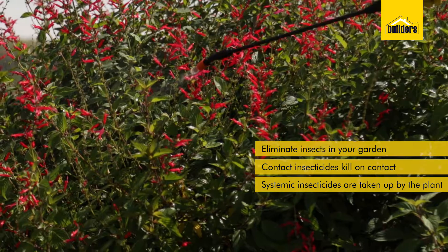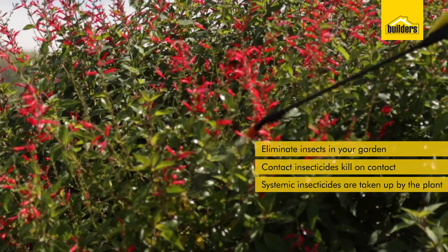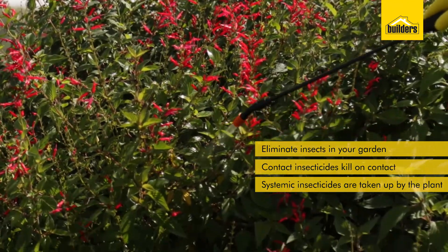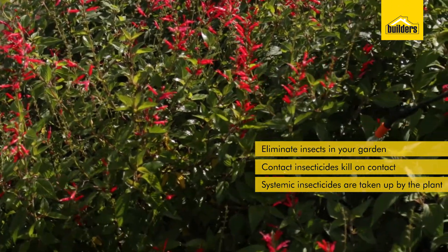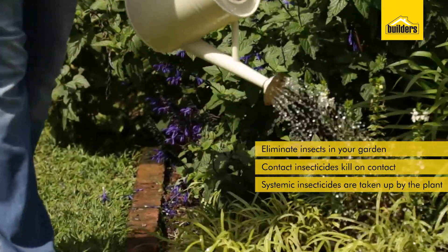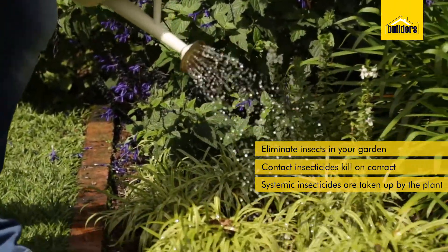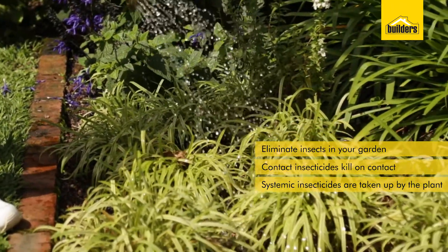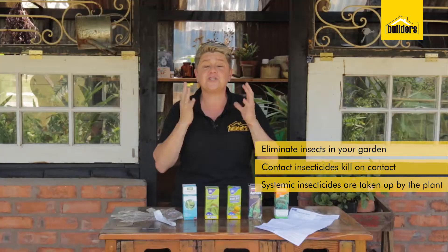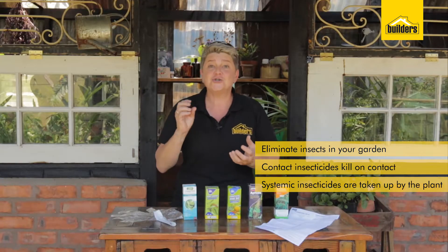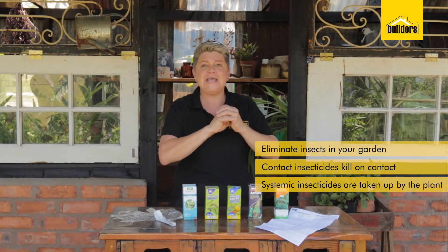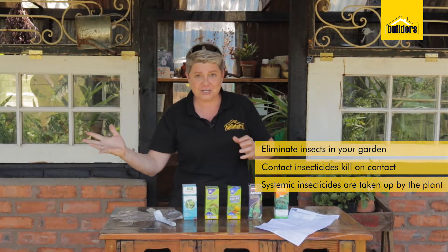They are applied in different ways. A contact insecticide is sprayed onto the actual bugs. A systemic is applied as a drench around the plant, which is then taken up into the plant cells and acts as a protection. So when the bug eats the plant, it then perishes.